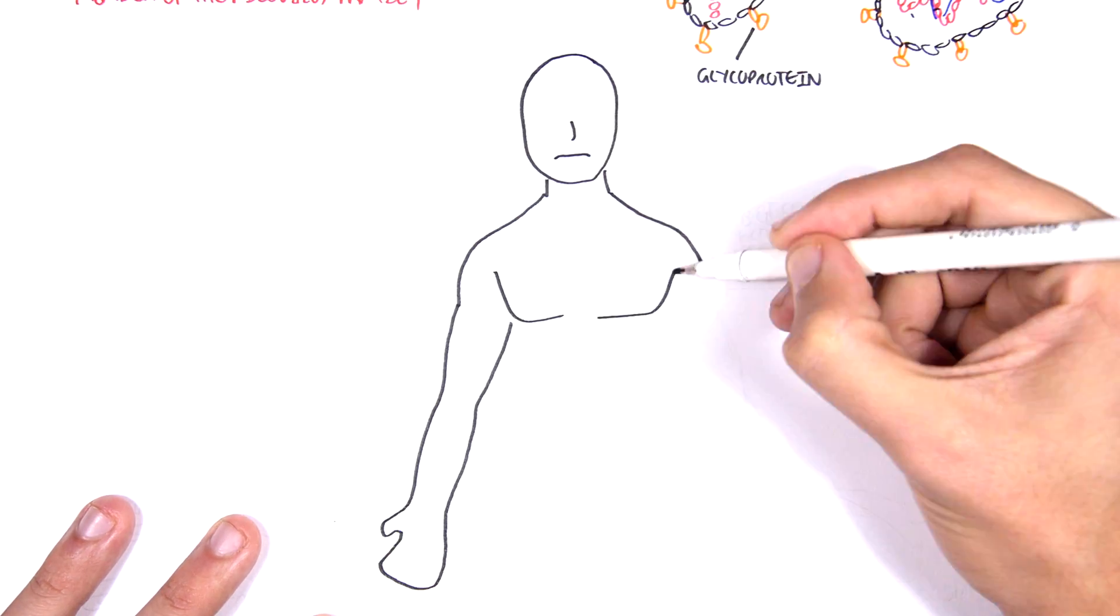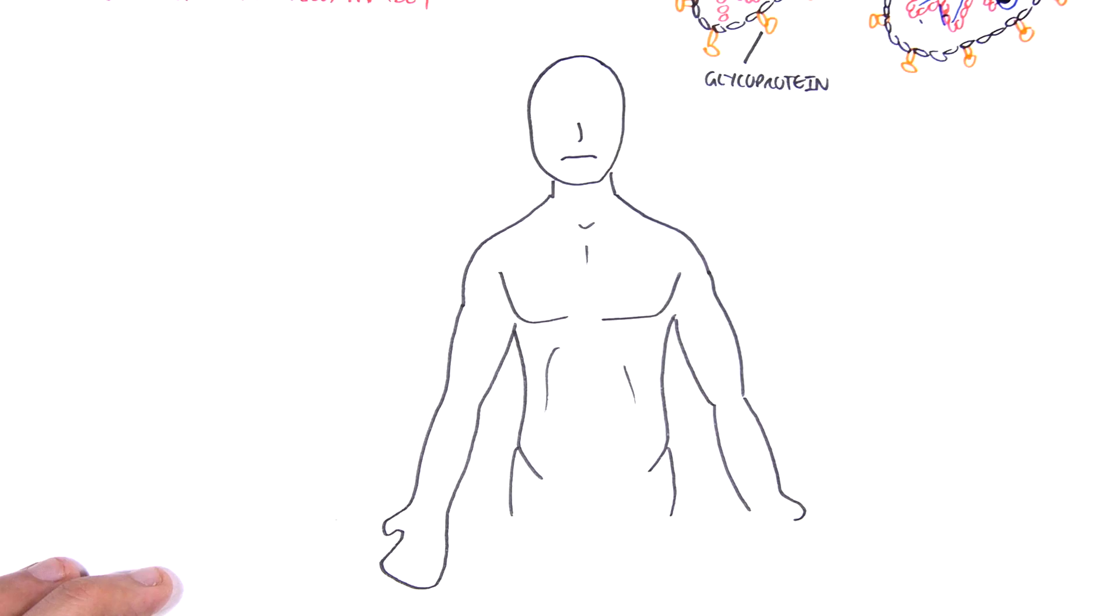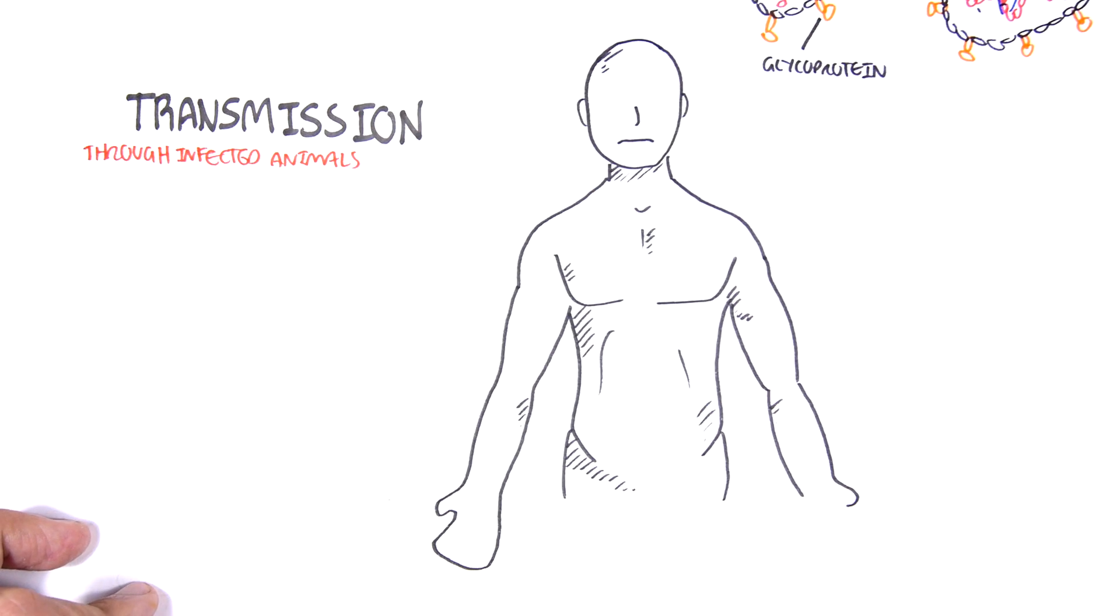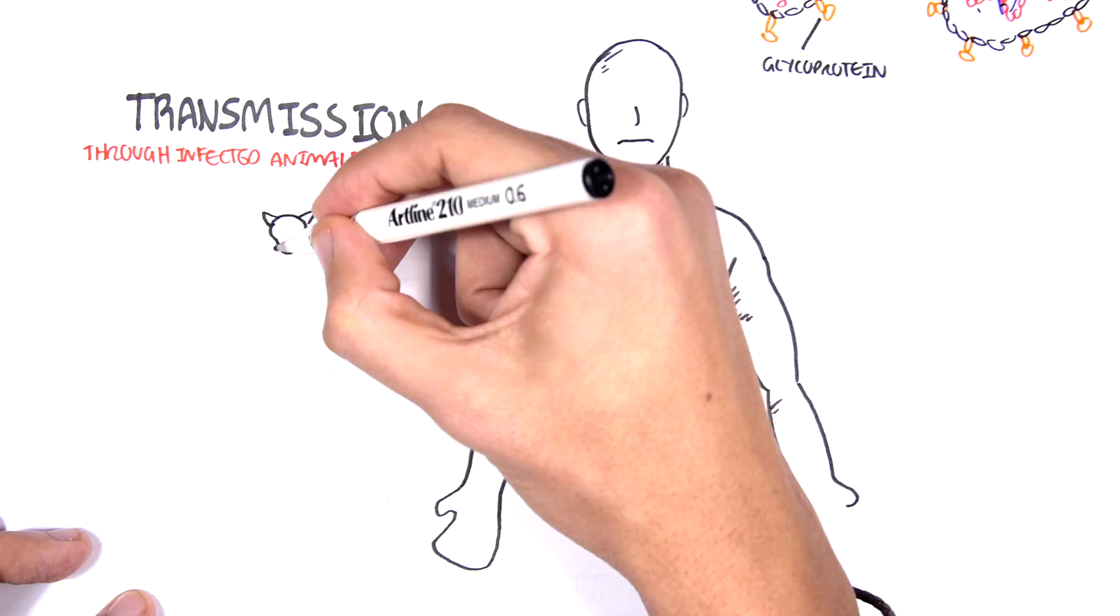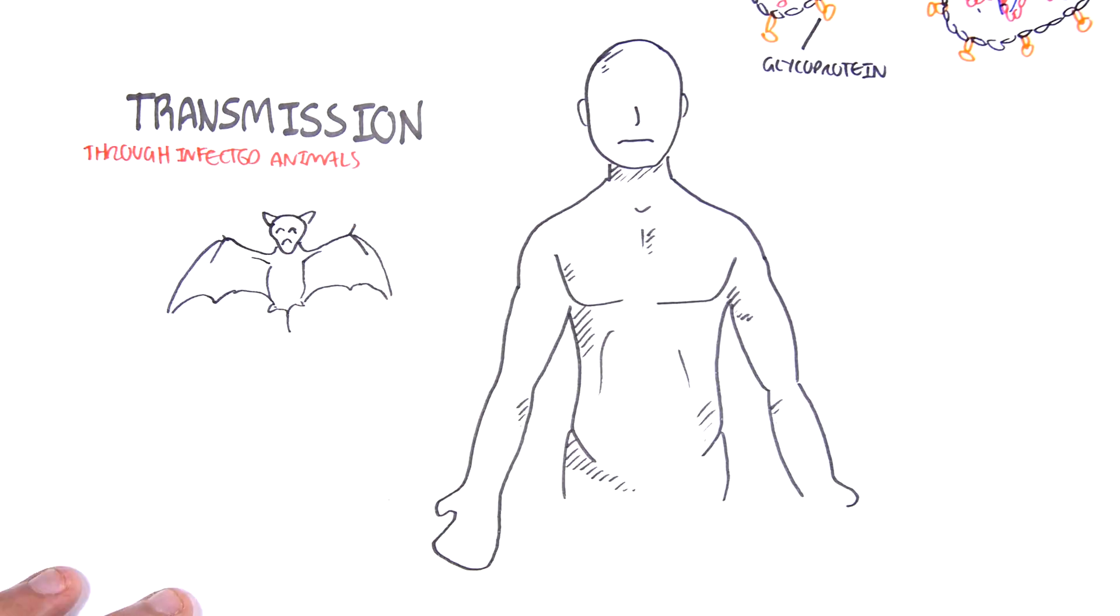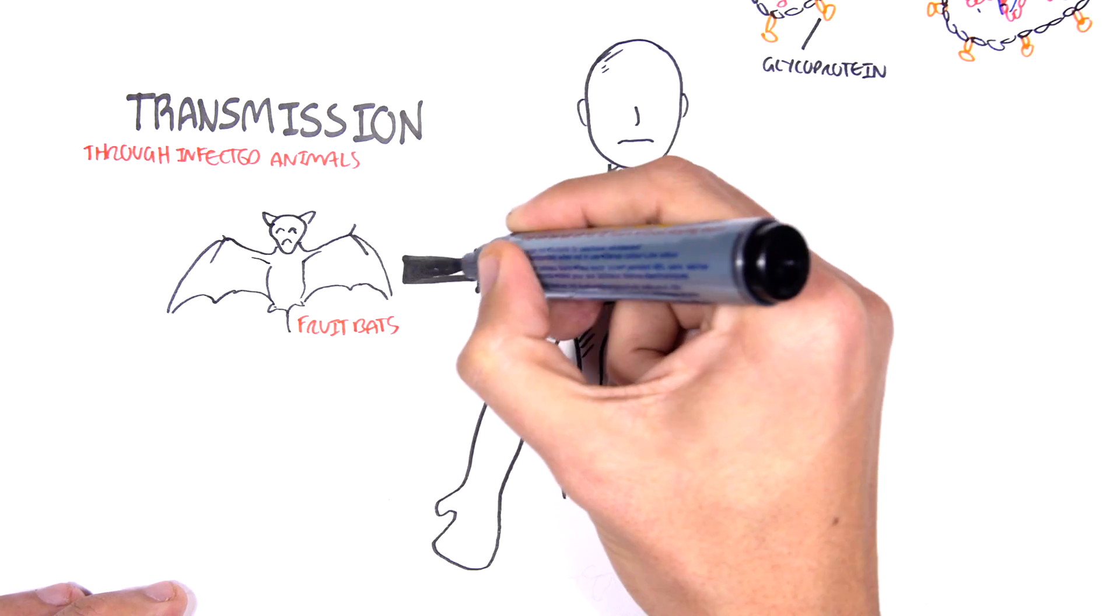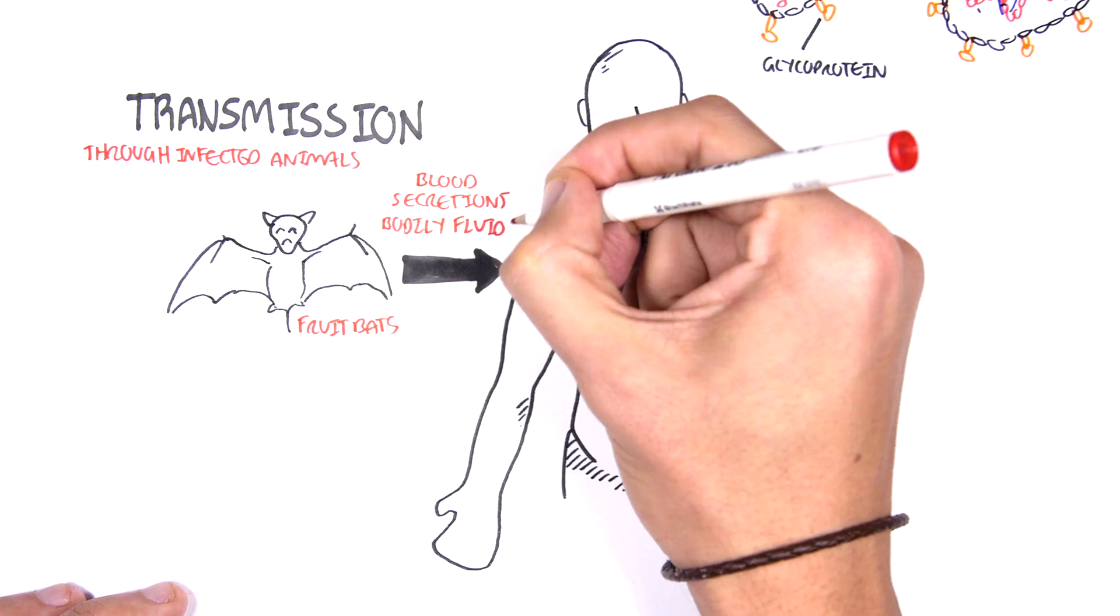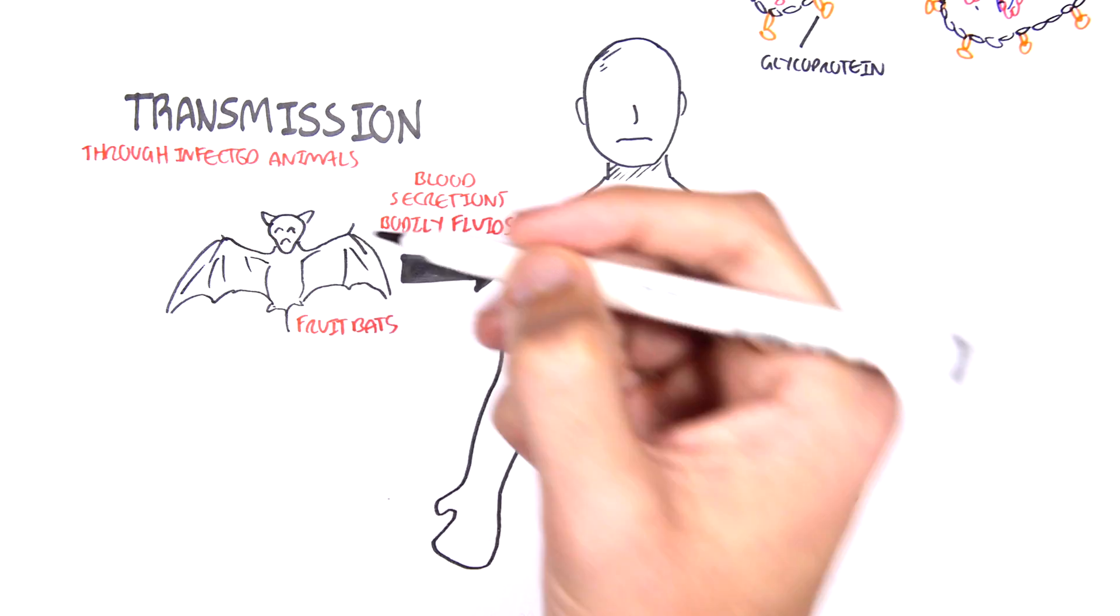Now let's learn about how the Ebola virus is transmitted to humans. Transmission of the Ebola virus to humans happens through infected animals such as fruit bats. Fruit bats carry the Ebola virus, and it can be introduced to humans through close contact with the fruit bats' blood, secretions, or other bodily fluids.